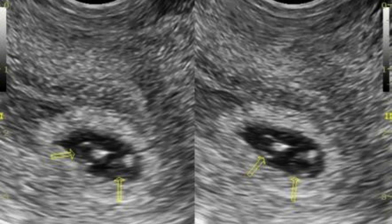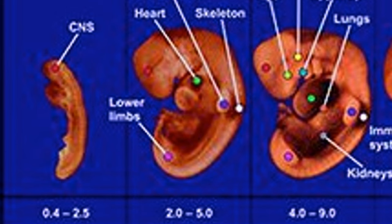In the third week, the baby is about 0.4 to 2.5 mm long. In this week, the brain and spinal cord begin to form. The mother has just missed her period for a few days and may be wondering if she is pregnant.